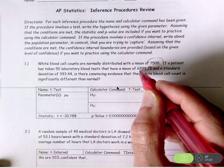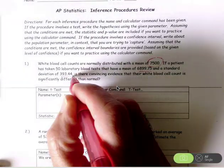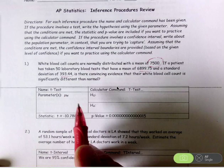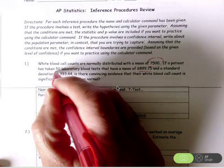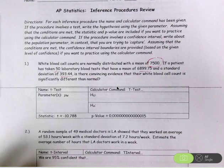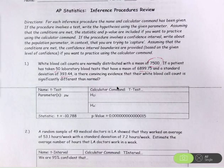Here is the sample mean. Here is the sample standard deviation. And then here's the sample size. So those are the values you have to enter into the calculator command in order to complete this t-test.